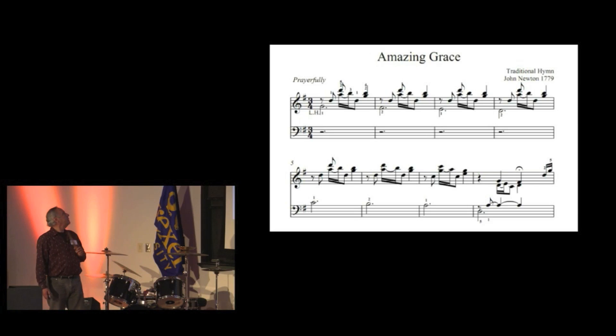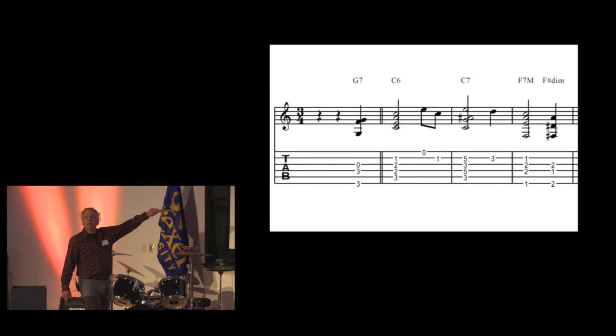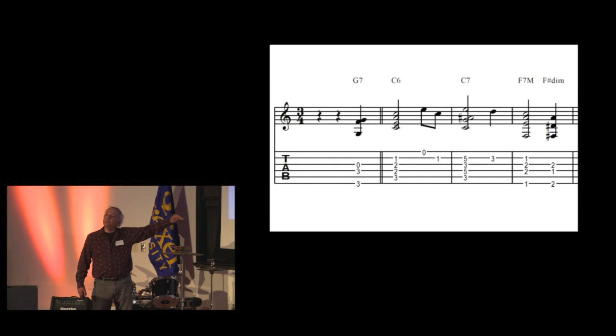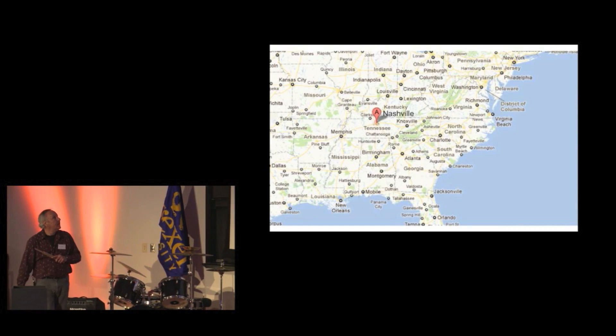This is Amazing Grace in the key of G. This is an alternative way, which you'll see on the bottom are six lines. This is called tablature. Guitar players use this. It's one line per string and those numbers show you which fret to play on.